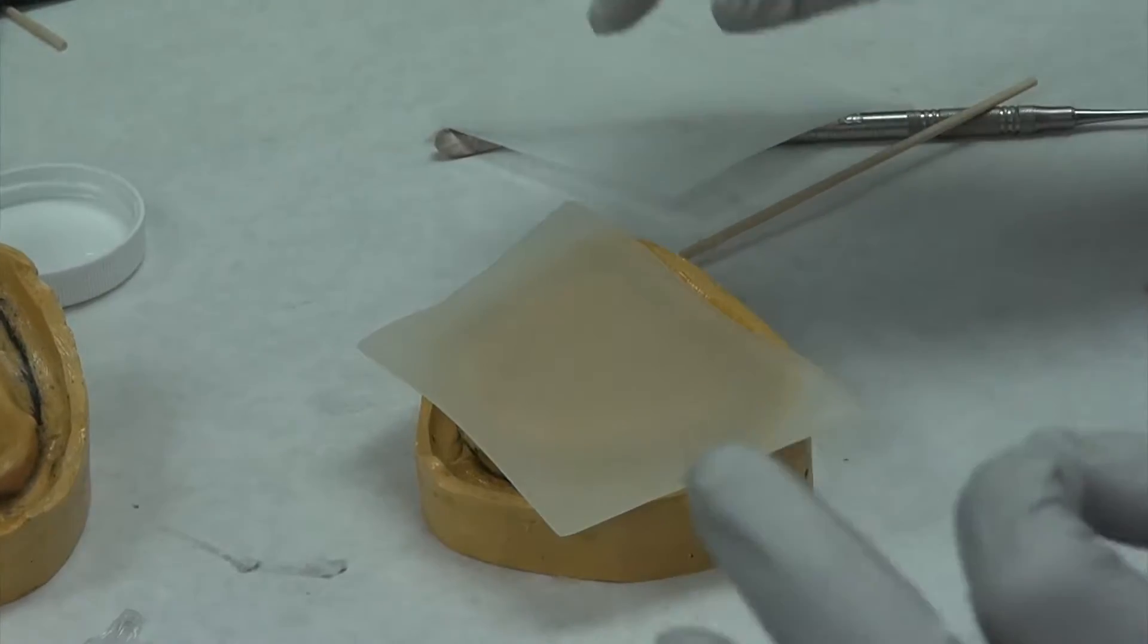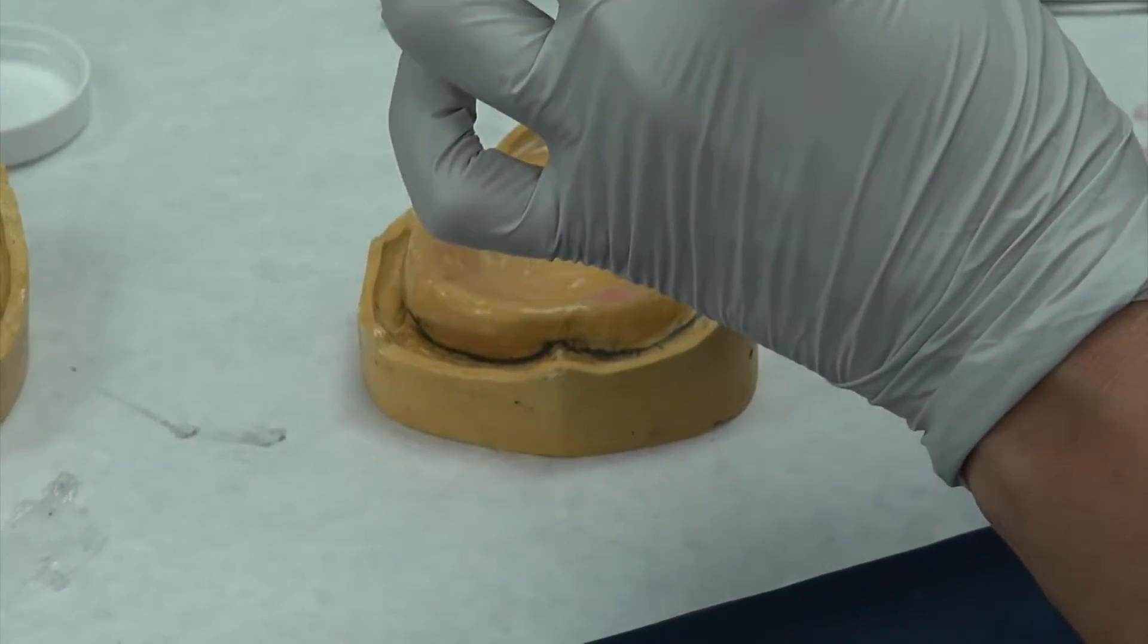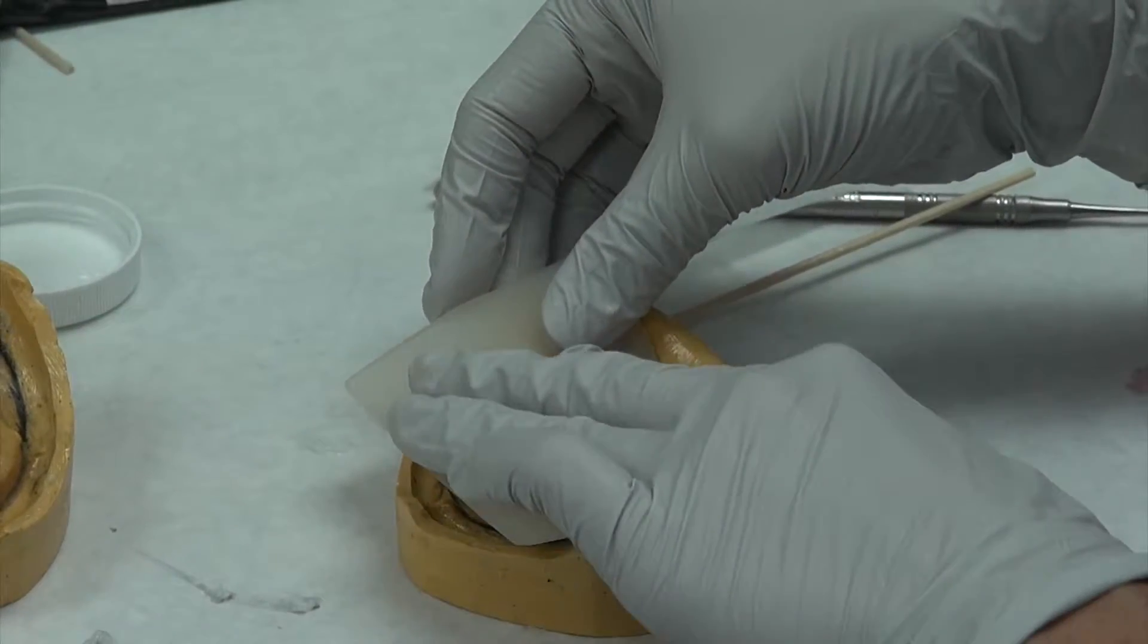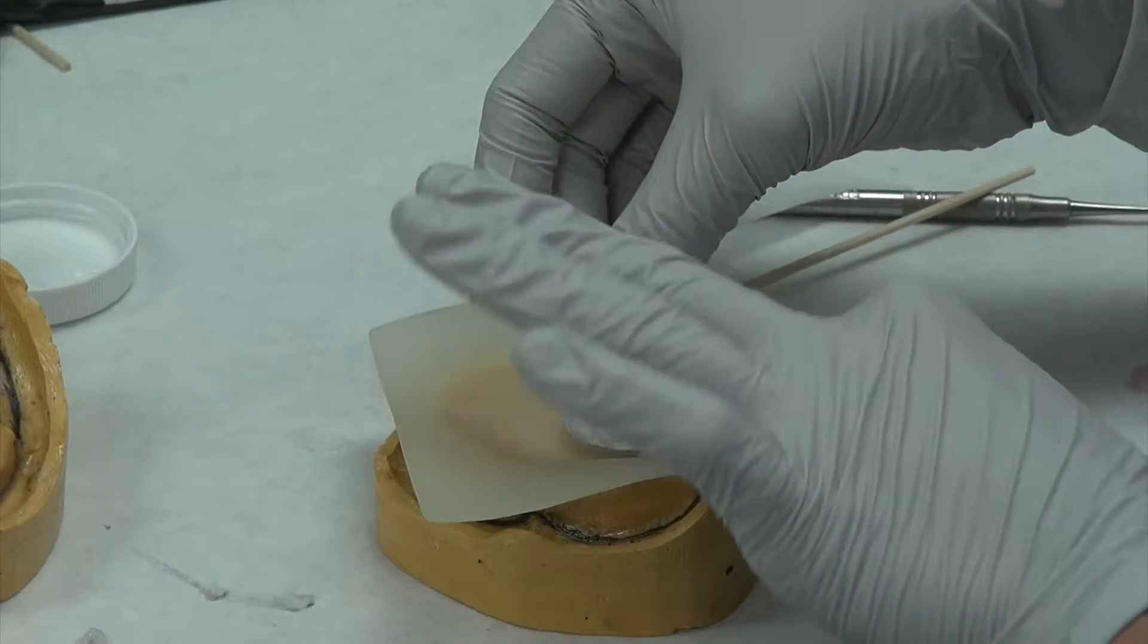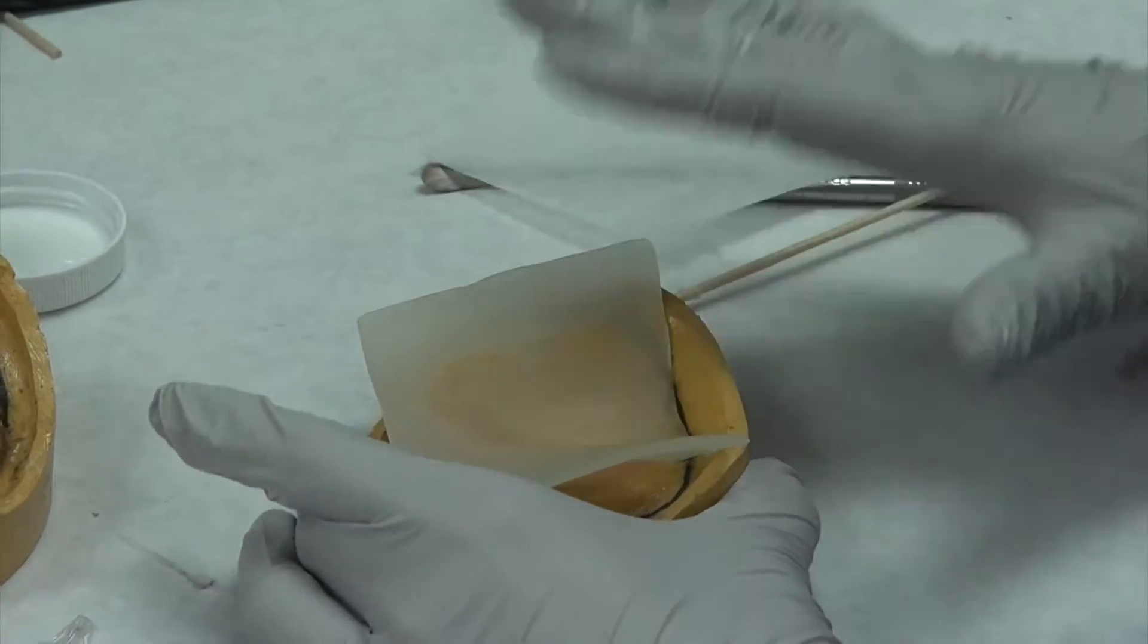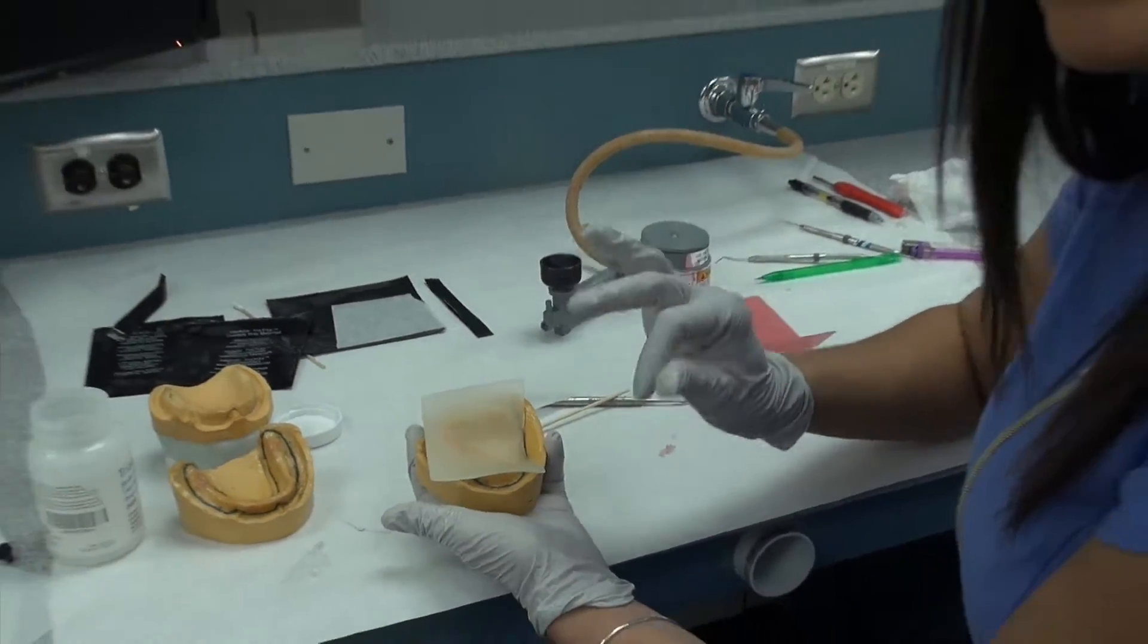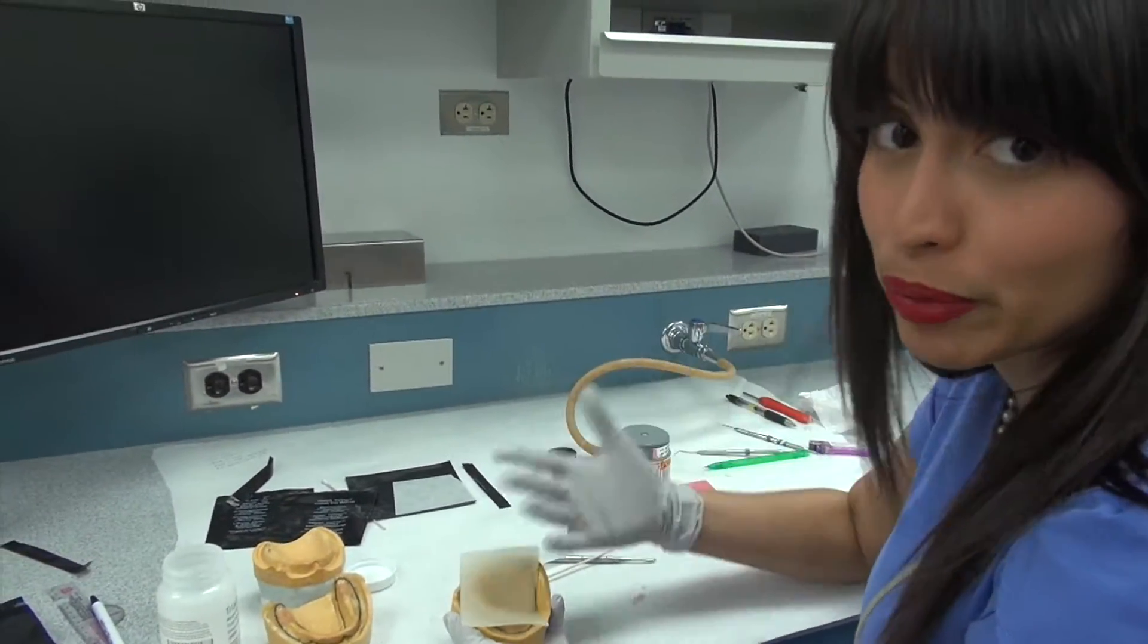Now key things to know, triad material is roughly 2 to 2.5 millimeters thick. You want the entire custom impression tray to be about 2 millimeters thick, so you want to minimally apply pressure here.